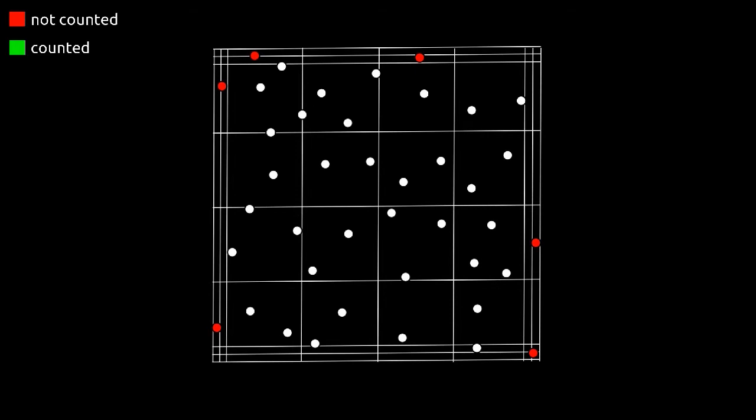Second, only cells that touch one of the two boundary lines, for example the upper and the left line, are counted. The cells that touch the two other boundary lines are not counted.